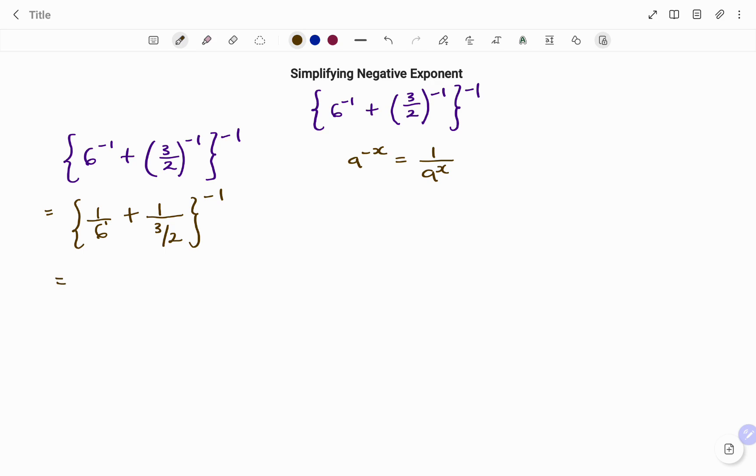Simplifying what I have in the bracket, I get 1 over 6 plus 2 over 3, all to the negative 1.